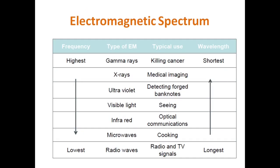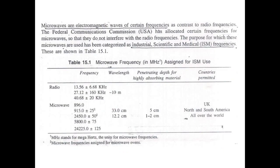According to the Federal Communication Commission of the US, microwaves have been categorized as ISM frequencies — Industrial, Scientific, and Medical frequencies. Because there is overlapping within the electromagnetic spectrum, some specific frequencies are designated for particular uses. Those used in industrial, scientific, and medical areas are clubbed together as ISM frequencies.